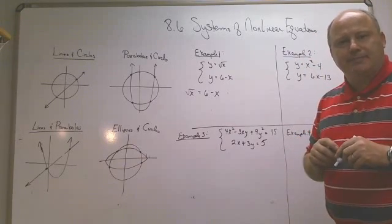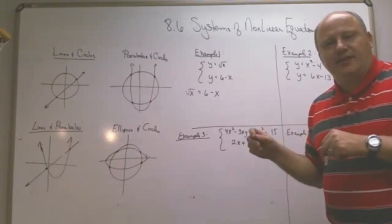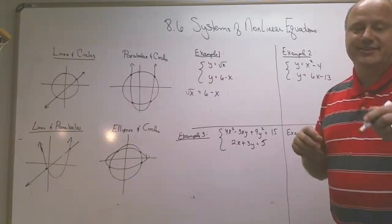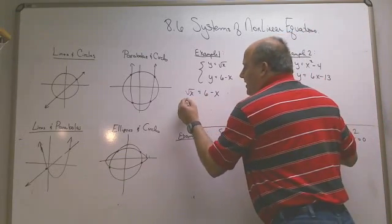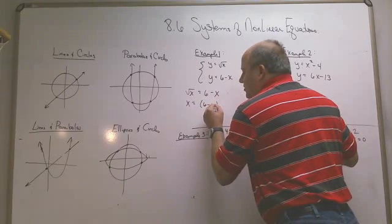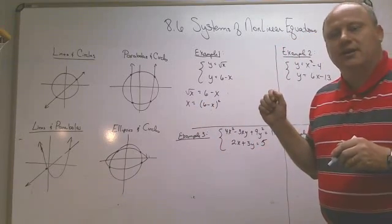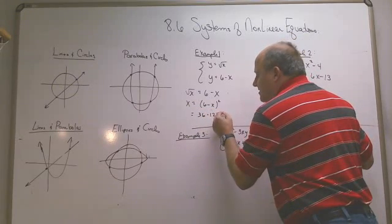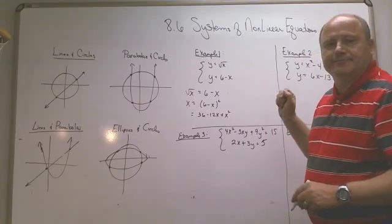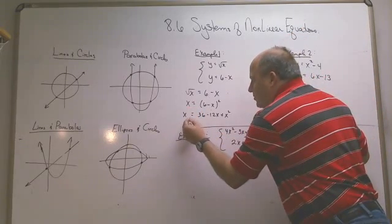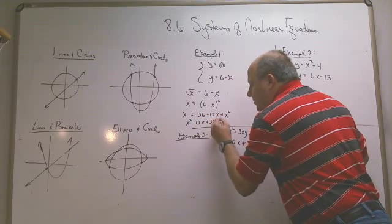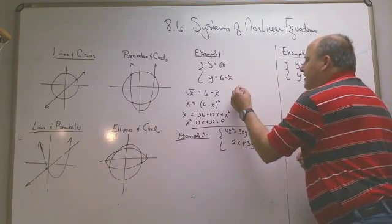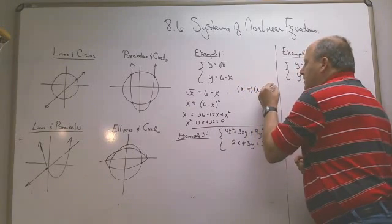Back earlier in this course we talked about square root problems and how to solve them. Remember, we isolate the square root and then we square both sides, then solve the resulting equation and check your answers. If you square both sides you get x on this side equals 6 minus x quantity squared. It's not 36 plus x squared though. You have to square the side. So it's going to be 6 minus x times 6 minus x, which is 36 minus 12x plus x squared. That equals x. So it turns out to be x squared minus 13x plus 36 equals 0. That factors to x minus 9 times x minus 4 equals 0.